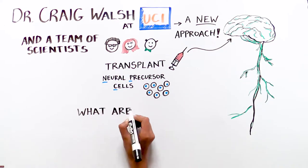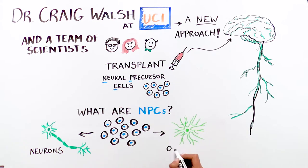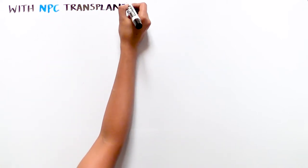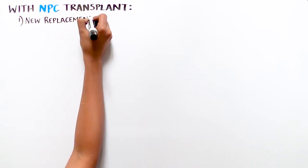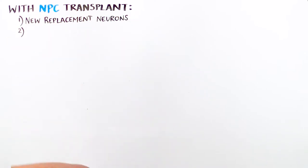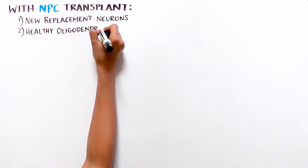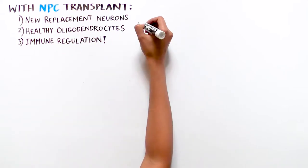What are NPCs? This is a group of cells that can become three different cell types, including neurons and oligodendrocytes, the cells that produce myelin. The idea is that if healthy NPCs are transplanted, these cells can first make new neurons to replace the ones that are damaged in MS, second make healthy oligodendrocytes which can make more myelin to insulate the neurons, and third regulate the immune system.